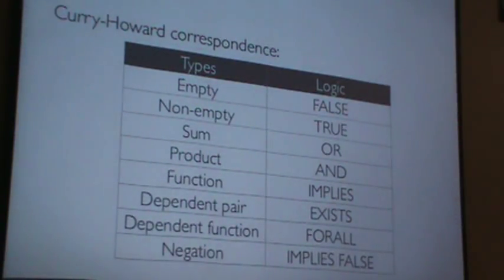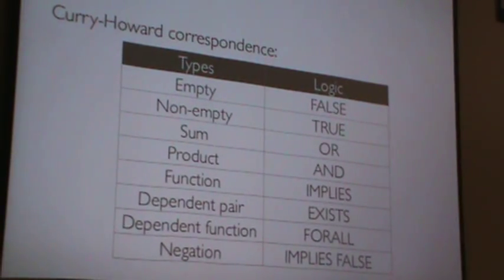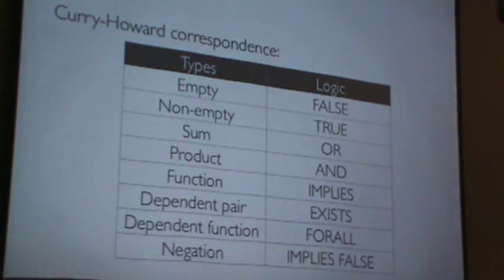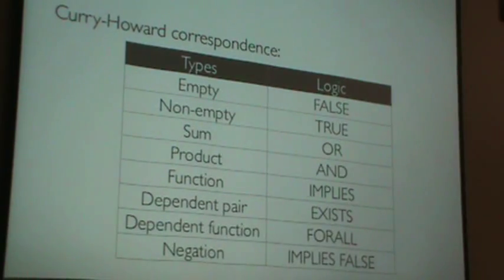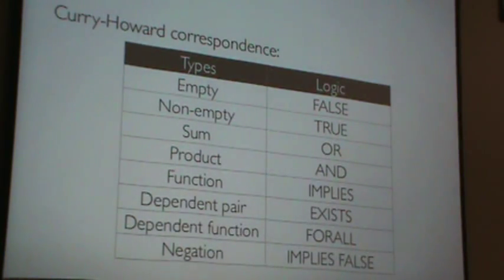The empty type corresponds to false. Any non-empty type is true — it might carry a bit of additional information, but it's at least true. Sum types are 'or' and product types are 'and'. Functions are implication. Dependent pairs and functions give you existential and universal quantification. And negation is anything that implies false is not true.